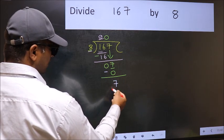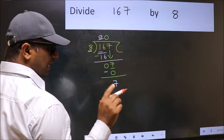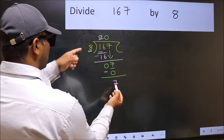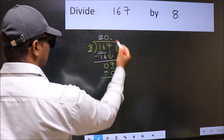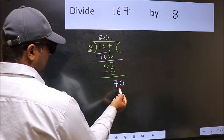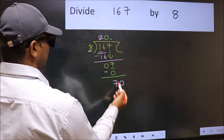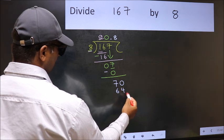Over here we did not bring any number down, and 7 is smaller than 8. So now you can put dot and take 0. So 70. A number close to 70 in 8 table is 8 times 8, which is 64.